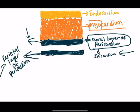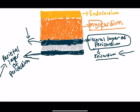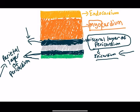The next layer is the parietal layer of the pericardium — note that I'm drawing it with a gap from the epicardium, because there is a space between these two layers filled with serous fluid. That gap with serous fluid is the pericardial cavity. After that, we have one more layer: the outer fibrous pericardium, which helps hold the structure of the heart and attach it to other structures in the thoracic area.